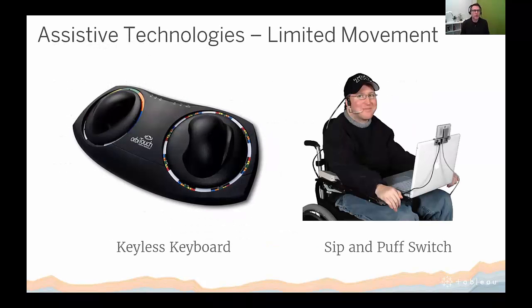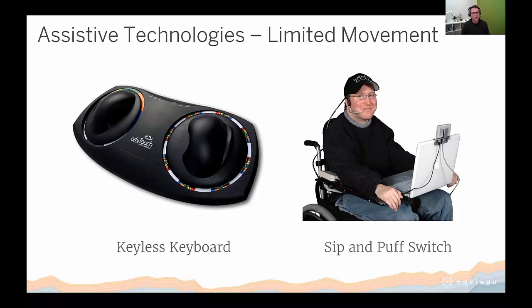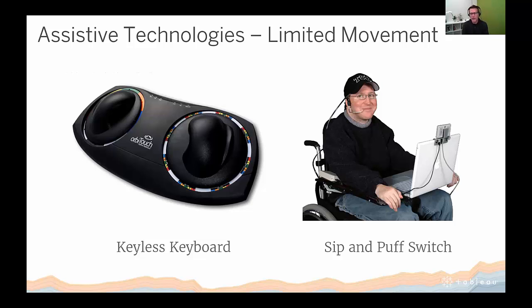Let's look at some examples of assistive technologies. In the first group there are examples designed to help people with limited movement. On the left we have a keyless keyboard — it allows someone with larger level motor control but not fine grain motor control to interface with a computer using two large switches. On the right, a gentleman is using a sip and puff switch — basically a straw you use your mouth to sip or puff on — to control wheelchairs or computers. Both of these devices interface with the computer through its standard keyboard interface, which is why keyboard navigation is so important in accessibility.